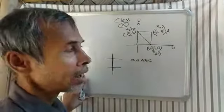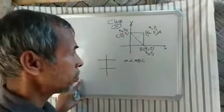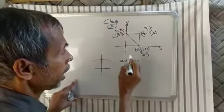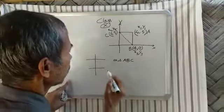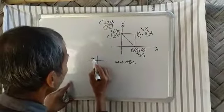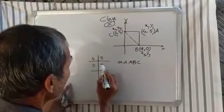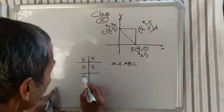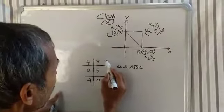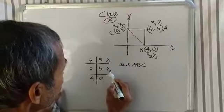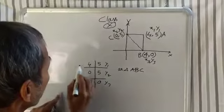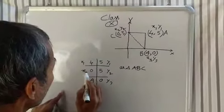Class 10 coordinate geometry: find the area of a triangle with coordinates (4,5), (0,5), and (4,0). We label these points with y1, y2, y3 and x1, x2, x3.